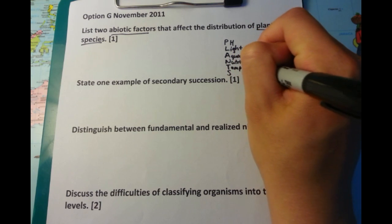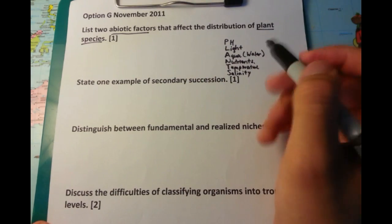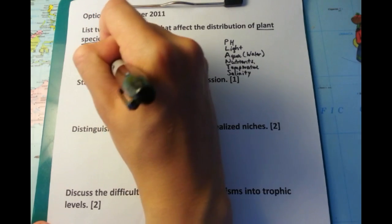P standing for pH, L for light, A for aqua or water, N for nutrients, T for temperature, and S for salinity. So I'm going to state the top two, pH of the soil and light intensity.